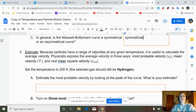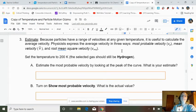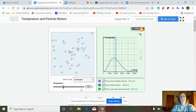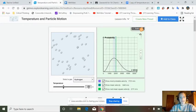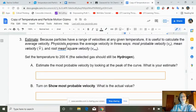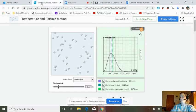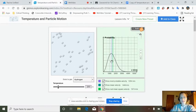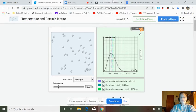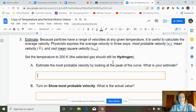So because particles have a wide range of velocities at any given temperature, it is useful to calculate the average velocities. Physicists express the average velocity in three ways: most probable, mean, and root mean. Set the temperature to 200 and the gas to hydrogen. Estimate the most probable velocity by looking at the peak of the curve. What is your estimate? Looking at data. So here's the peak. The highest point, if we go down, I'd say about 1,200 meters per second.